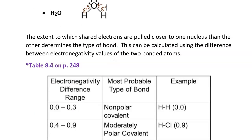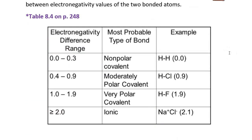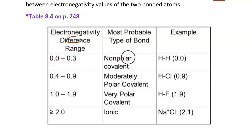The extent to which shared electrons are pulled closer to one nucleus than the other determines the type of bond. This can be calculated using the difference between electronegativity values of the two bonded atoms. There's a chart on page 248 of your book. Each atom in a covalent bond has an electronegativity number from the chart on page 181. When you subtract those two electronegativity values, that gives the difference. When the difference is very small, that's a nonpolar covalent bond.